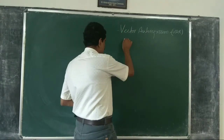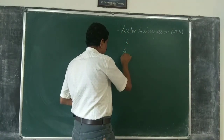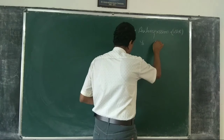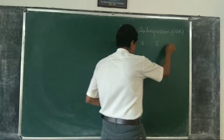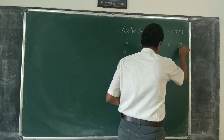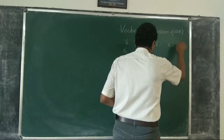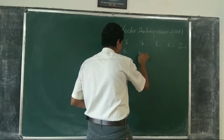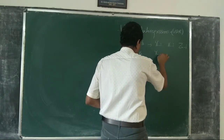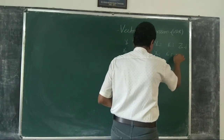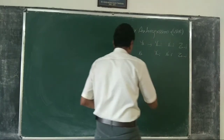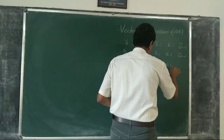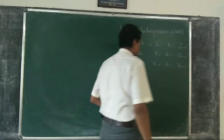Now consider three variables: yt, xt, zt. Now yt is in the first equation, with lagged terms yt minus i, xt minus i, zt minus i. Then xt on yt minus i, xt minus i, zt minus i, and zt also on yt minus i, xt minus i, zt minus i.